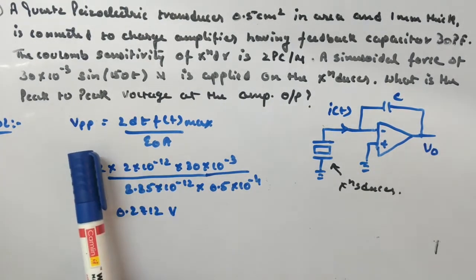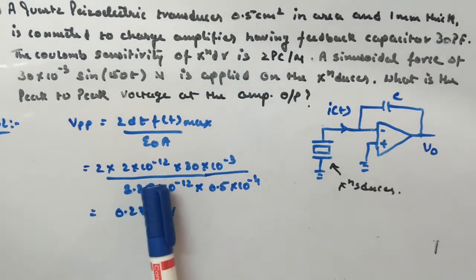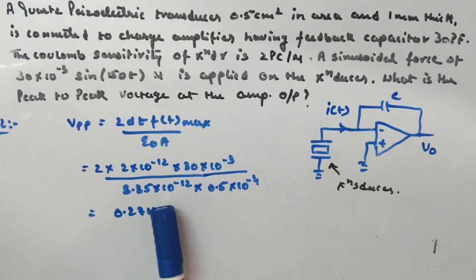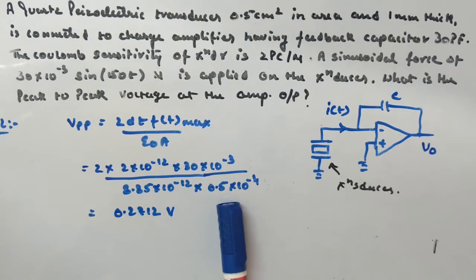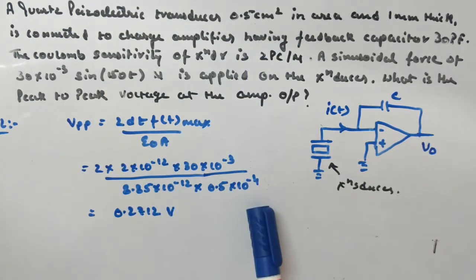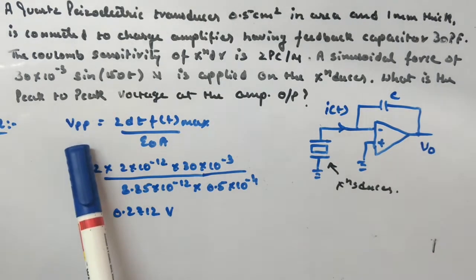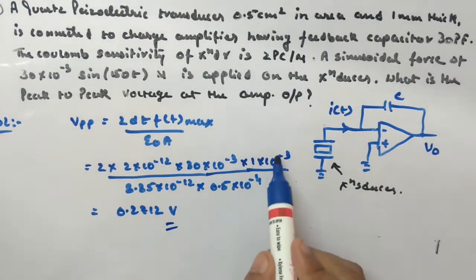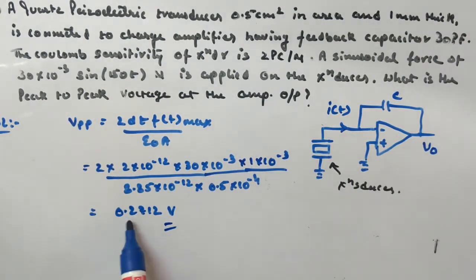Plugging in the values: V_p-p = 2 × (2 × 10⁻¹² C/N) × (30 × 10⁻³ N) divided by (8.85 × 10⁻¹² × 0.5 × 10⁻⁴ m²). Note that t = 1 × 10⁻³ m is also included in the numerator. Solving this gives a peak-to-peak output voltage of 0.2712 V.